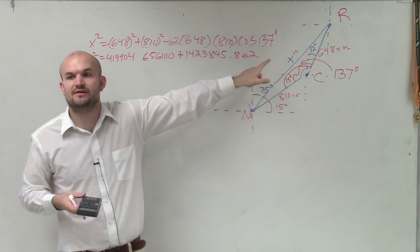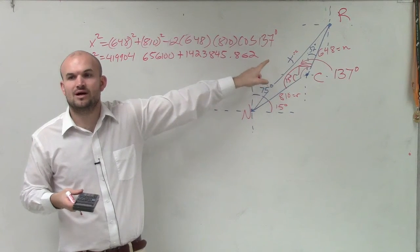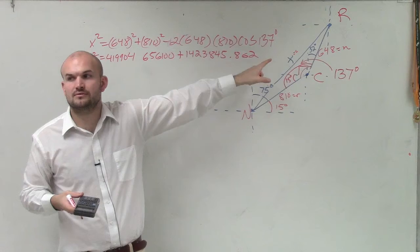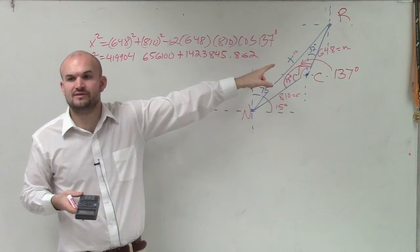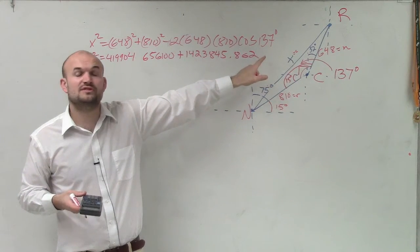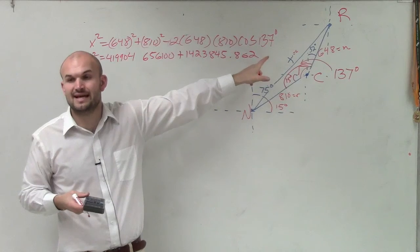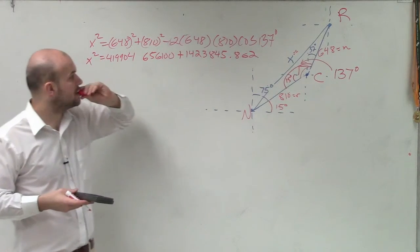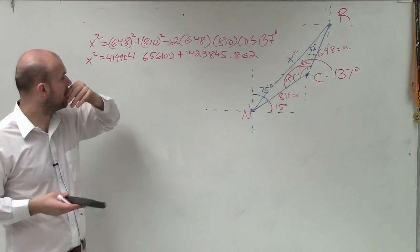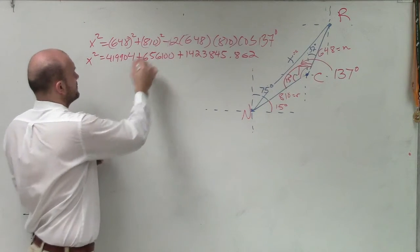The cosine of 137. What quadrant is 137 in? What quadrant is the angle 137 in? Second. Is cosine positive or negative in the second quadrant? Negative. So if you take the cosine of 137, it's a negative value. Yeah, I just didn't write that in there.